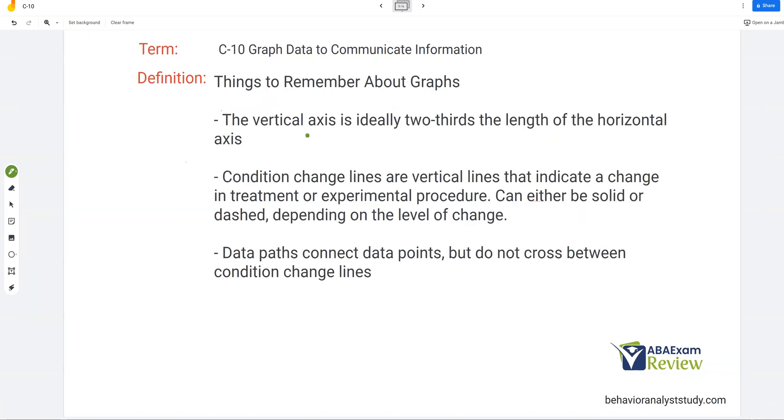All right, a few last notes about graphs. The vertical axis is ideally two-thirds the length of the horizontal axis. This is for visual analysis purposes, so don't manipulate the length of your horizontal and vertical axes just to make your data fit. Two-thirds the length is the standard. Try to stick with that. Condition change lines are vertical lines that indicate a change in treatment or experimental procedure. So if we had a graph, and we had baseline, and then we had our data path, we might have a condition change line for our intervention change. And there might be something like that. So that's our condition change line to indicate a change in treatment or experimental procedure.